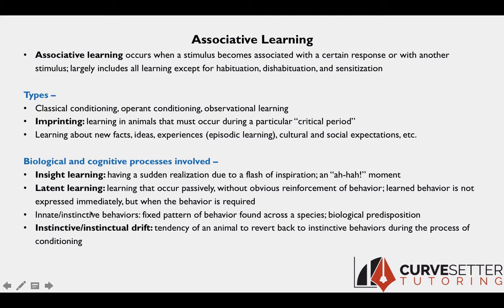There are also many innate or instinctive behaviors — fixed patterns of behavior and responses to certain stimuli found across a species. Instinctive behavior is uniform across the species and is called a biological predisposition. A related term is instinctive drift: the tendency of an animal to revert back to instinctive behaviors during conditioning, disrupting the learning of a new behavior.